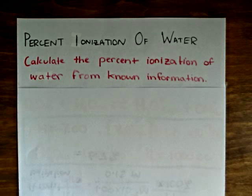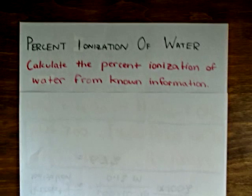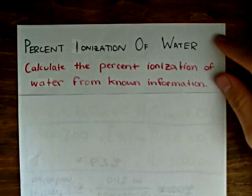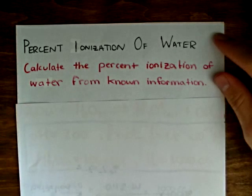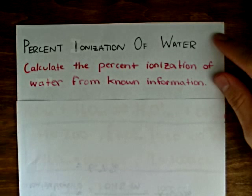You can calculate the percent ionization of water from information that you, as a chemistry student, should be very familiar with. We're going to assume that this will be at standard conditions, so standard temperature and pressure.